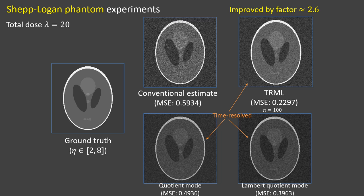The TRML method achieves an MSE reduction by a factor of 2.6 compared to the conventional one. The two other time-resolved methods achieve substantial but lesser improvements. These results do not use spatial regularization.